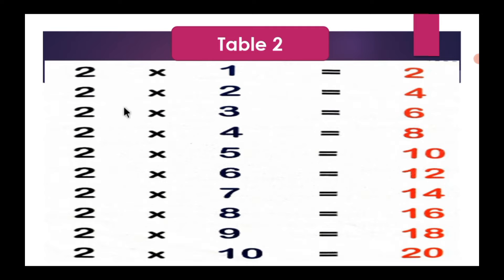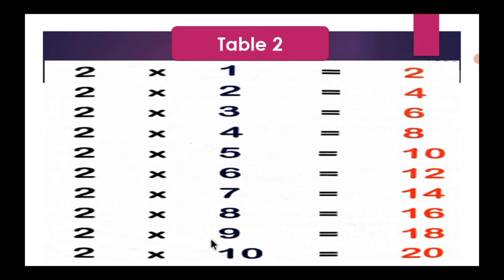Once again: 2 ones are 2, 2 twos are 4, 2 threes are 6, 2 fours are 8, 2 fives are 10, 2 sixes are 12, 2 sevens are 14, 2 eights are 16, 2 nines are 18, 2 tens are 20.